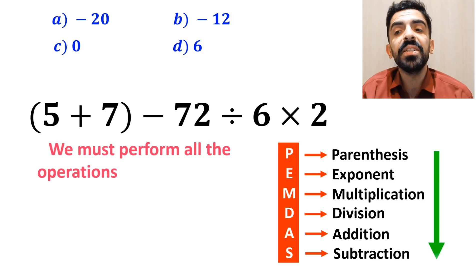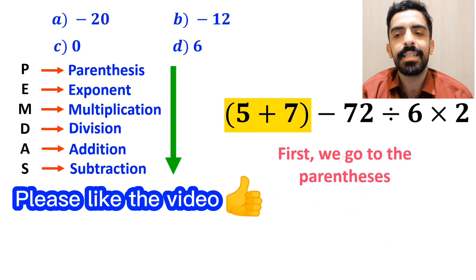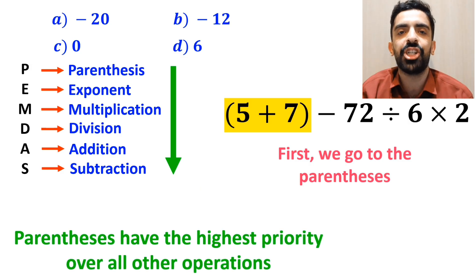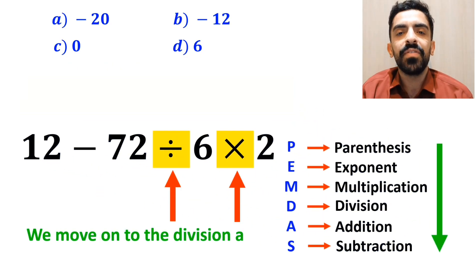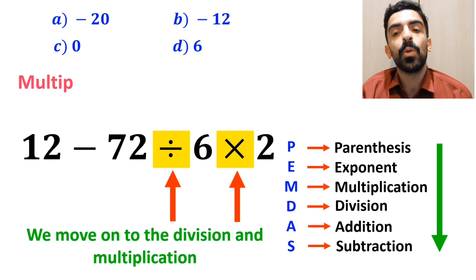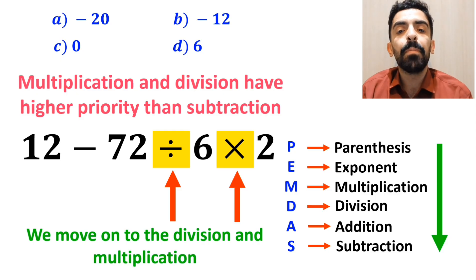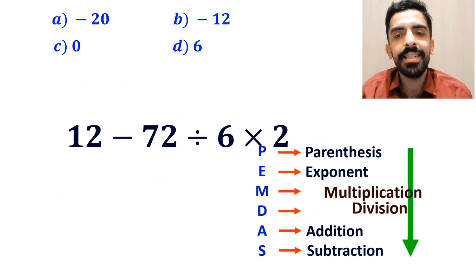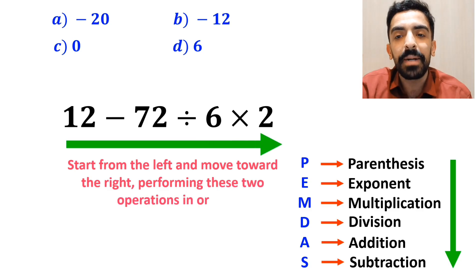First we go to the parenthesis, because according to the PEMDAS rule, parentheses have the highest priority over all other operations. So we can write this expression as 12 minus 72 divided by 6 multiplied by 2. In the next step, we move on to the division and multiplication, because multiplication and division have higher priority than subtraction. However, it's very important to note that multiplication and division have exactly the same level of priority. In this situation, the best approach is to start from the left and move toward the right, performing these two operations in order.